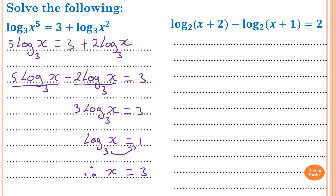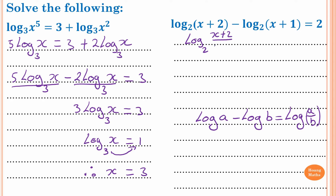Second problem. To solve this, first of all, we need to know that log of a minus log of b is equal to log of a over b. So therefore this becomes log base 2 of (x plus 2) over (x plus 1), which gives me 2.